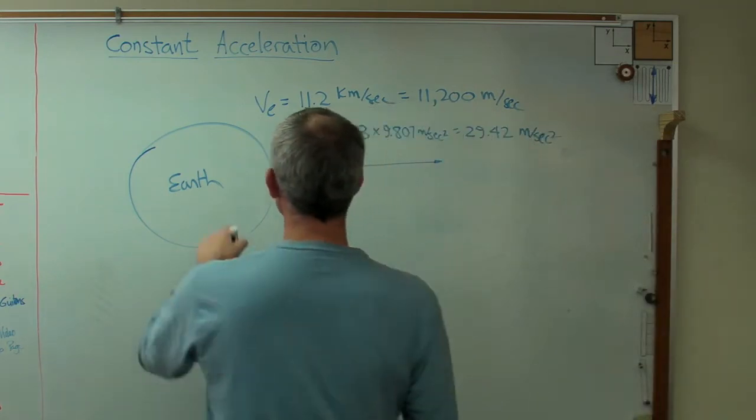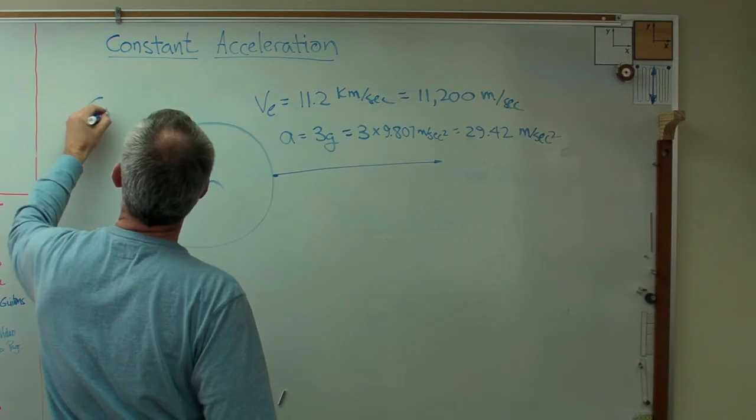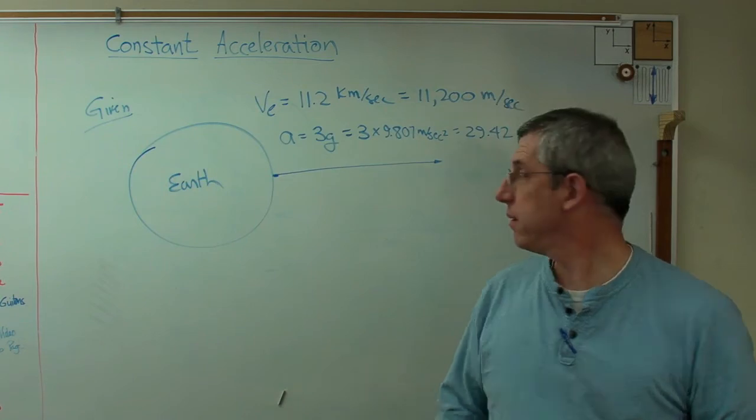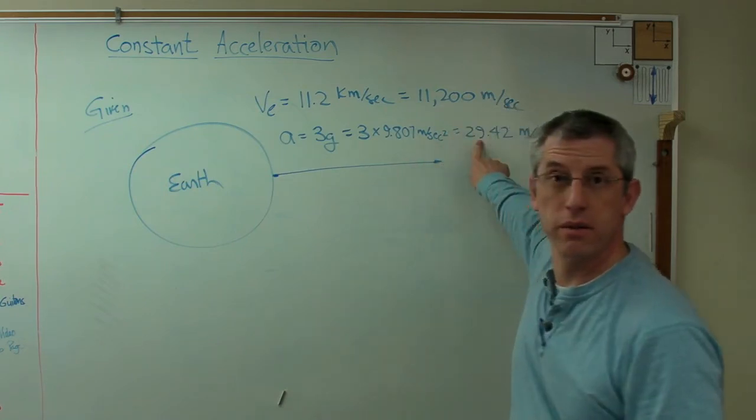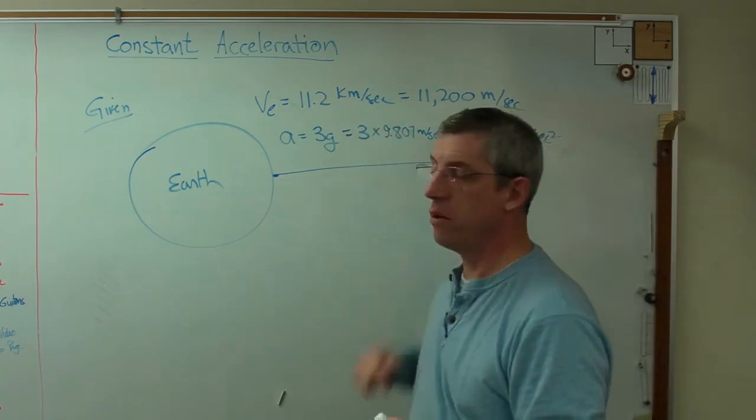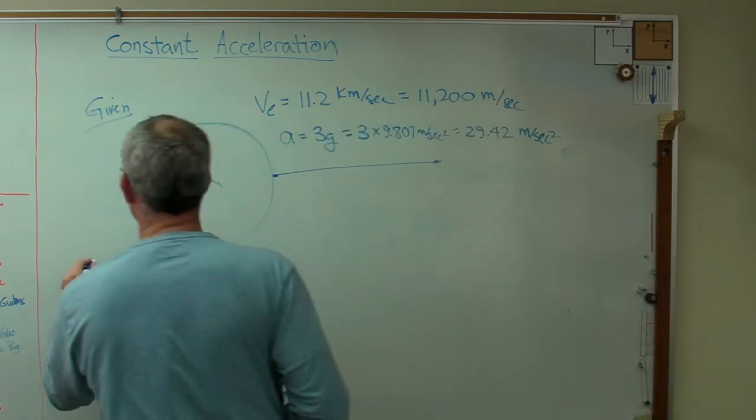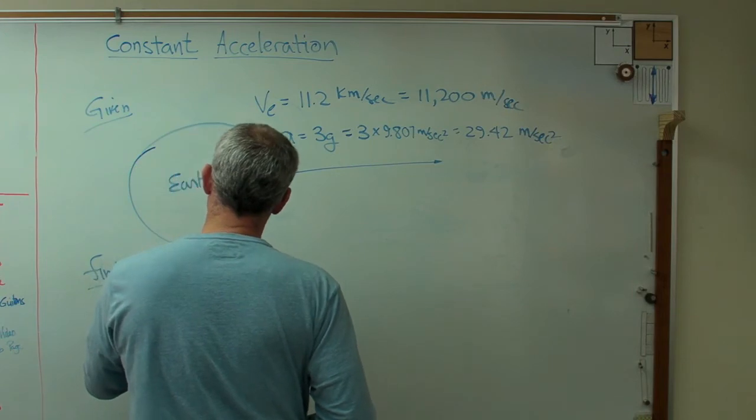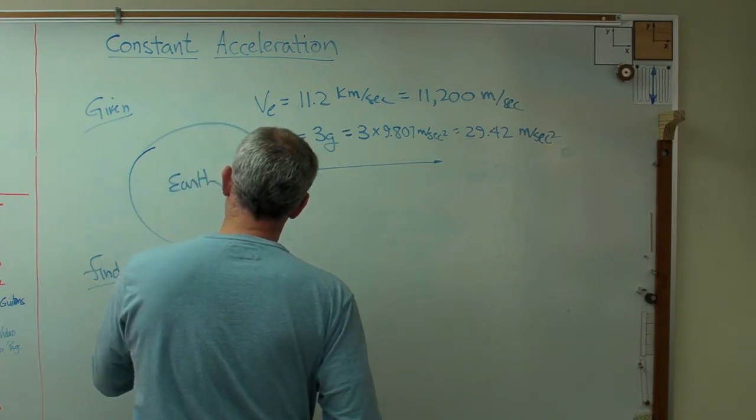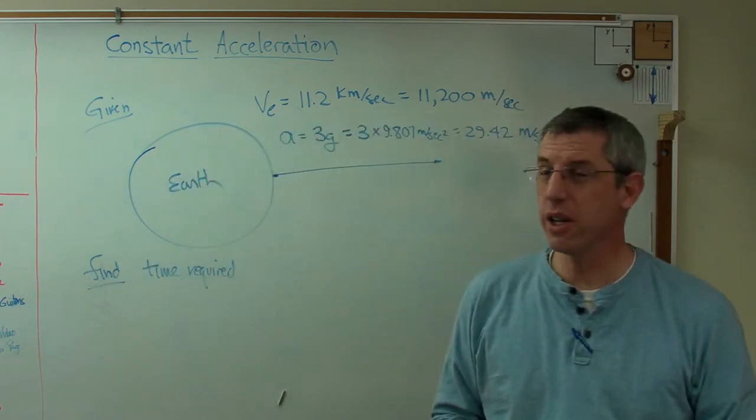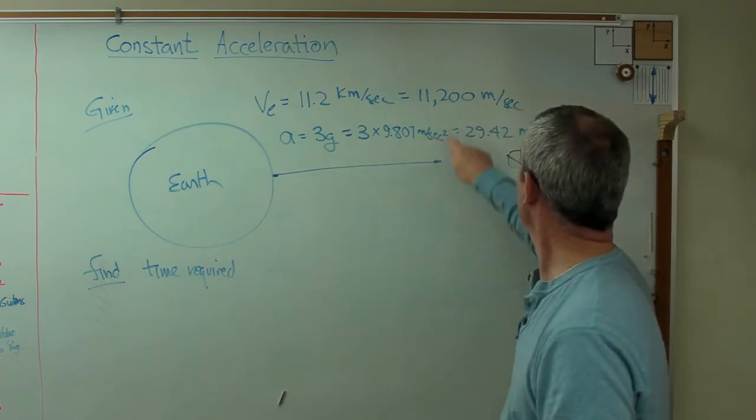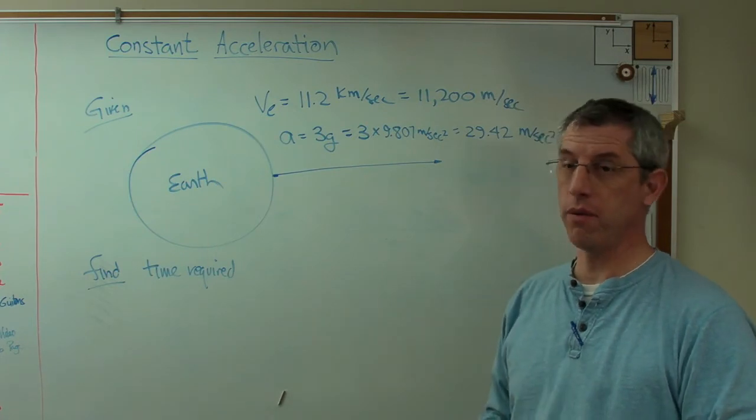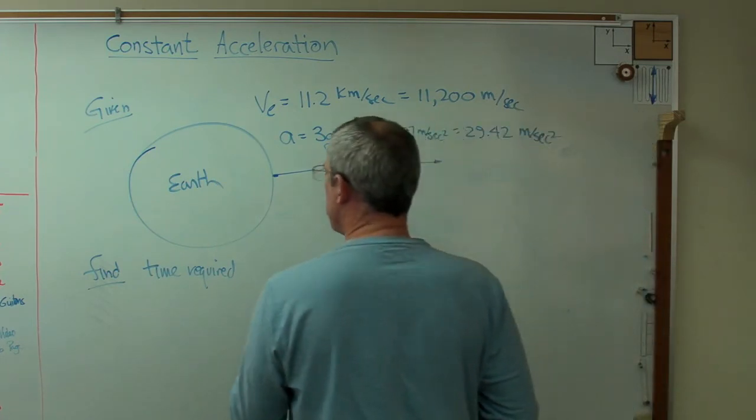So the question is, given all this stuff, how long would you have to accelerate at that rate of acceleration to get to escape velocity? So we're going to find time required. That is, how long are you going to be smushed back in your seat at 3Gs in order to reach that velocity? Because if you reach that velocity, you get to go away from the Earth forever and ever.